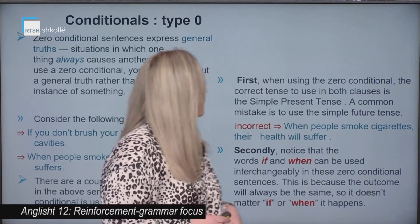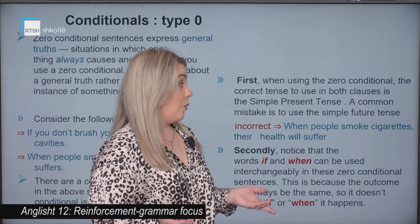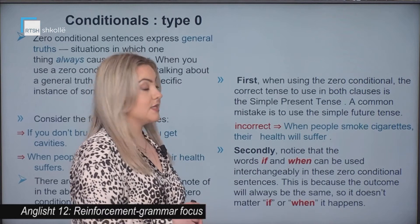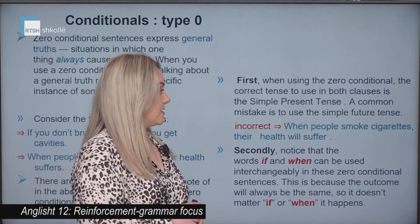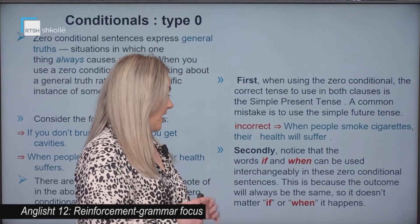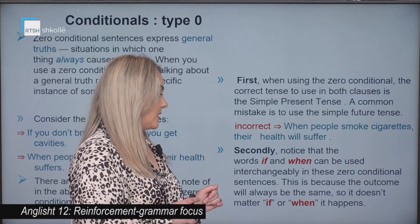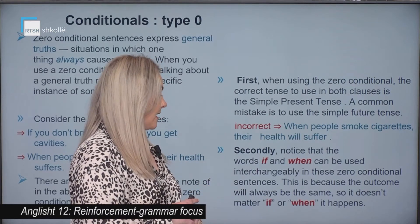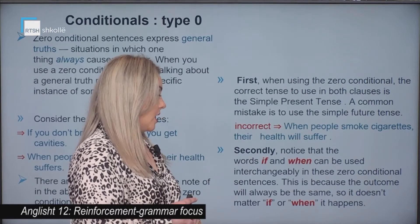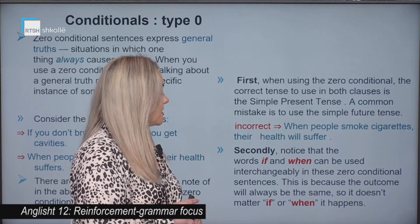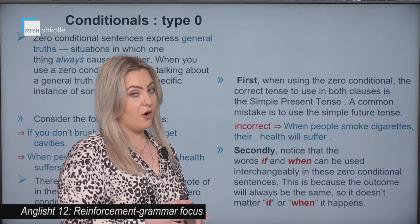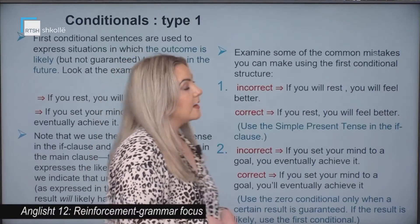When using the zero conditional, the correct tense to use in both clauses is the simple present tense. A common mistake is to use the simple future tense. Notice that the words 'if' and 'when' can be used interchangeably in zero conditional sentences, because the outcome will always be the same, so it doesn't matter if or when it happens.